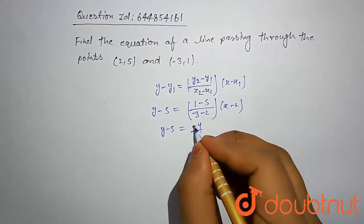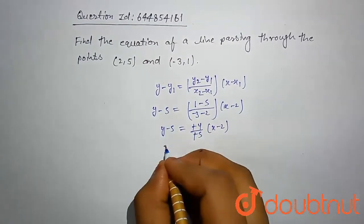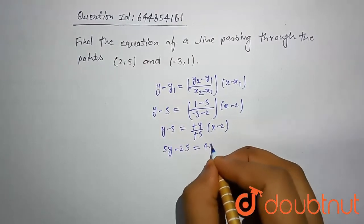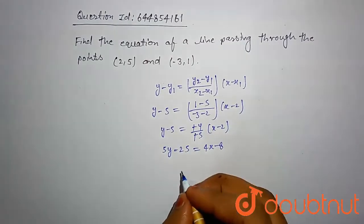This is 5y minus 25 equal to 4x minus 8.